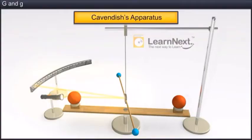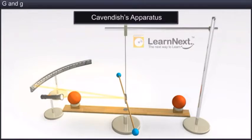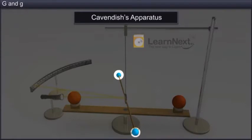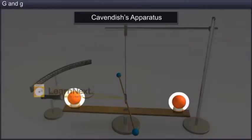Have a look at Cavendish's apparatus. It consists of two pairs of spheres: one small pair of spheres, and the next is a large pair of metallic spheres.